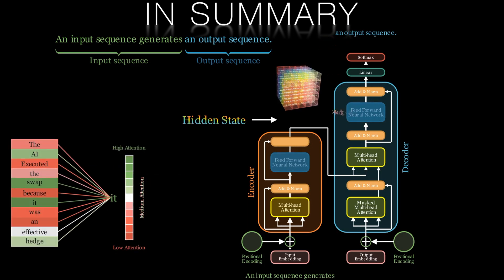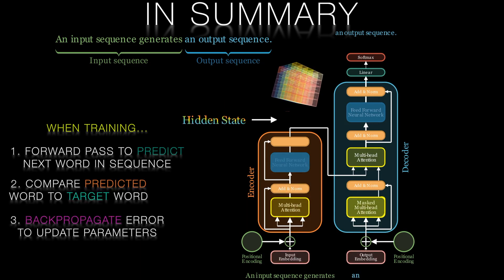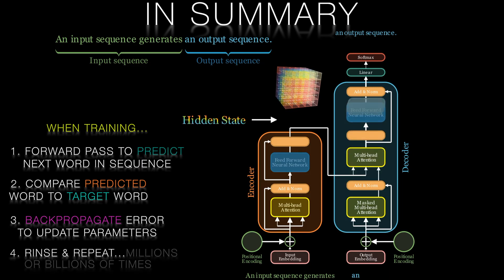We also looked at the brute force training process, utilizing back propagation to update the parameters in the transformer using huge training data sets over millions or billions of iterations.